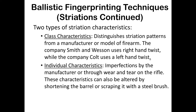Individual characteristics can also come from imperfections during manufacturing. If a drill is used a thousand times on a thousand different guns, you'll see a difference in the patterns between the first use and the 700th use — those would be individual characteristics. If guns were altered by shortening the barrel or scraped with a steel brush — an improper way to clean a firearm — it would scratch the inside and you would see additional imperfections.